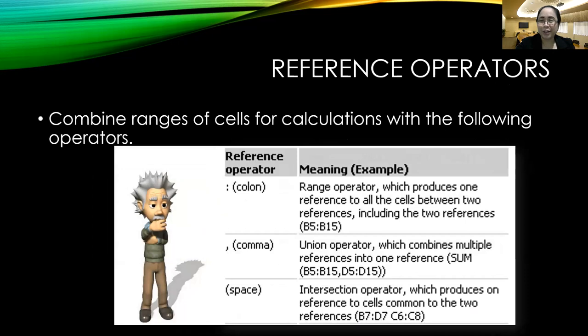Now the last operator type is the reference operator. The reference operator combines ranges of cells for calculations. Now there are three major reference operators: the colon, the comma, and the space. Now looking at the colon, the definition of a colon: the range operator produces one reference to all the cells between two references, including the first and last reference.